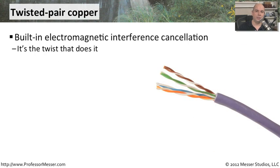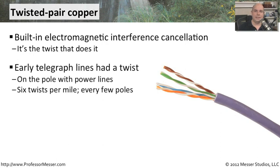In local area connections, we usually use twisted pair cabling, where there are many different copper wires inside a cable. They're all twisted together into pairs, which creates a way to cancel out any interference that might hit the wiring as it travels from one side to the other. It's that twist inside that handles the cancellation. Even early telegraph lines had twists inside their cables — the telegraph lines were two wires that went across very long distances, and they very often were sharing power on those same poles.